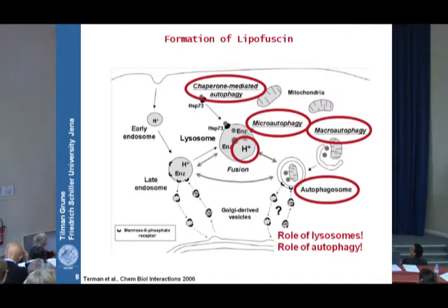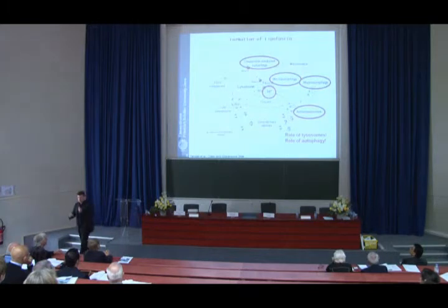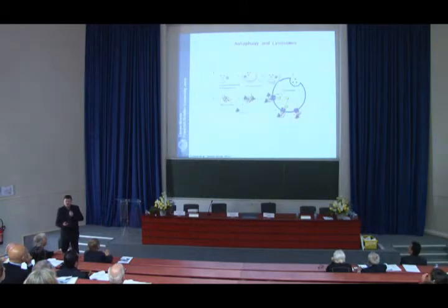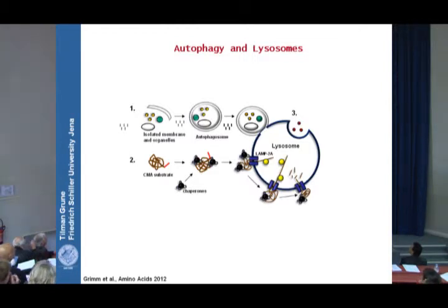This theory was triggered by the observation that most lipofuscin in cells is found in lysosomes — just by staining you can always find it there. Today we know more about autophagy and how material gets into lysosomes. There are basically three processes.